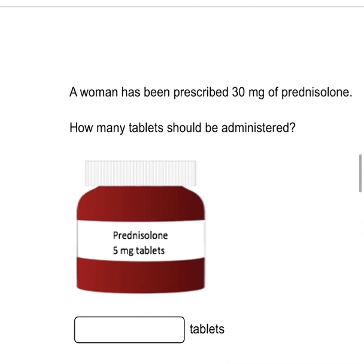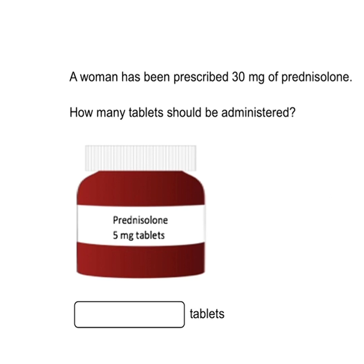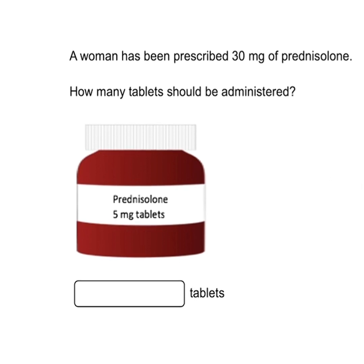The next question says a woman has been prescribed 30 mg of prednisolone — how many tablets should be administered? The prescribed dose is 30 mg and the available dose is 5 mg tablets. You simply divide the prescribed dose by the available dose: 30 ÷ 5 = 6 tablets. To avoid an overly long video, I'll pause the numeracy here — subscribe to come back for the remaining questions.